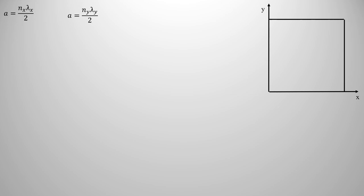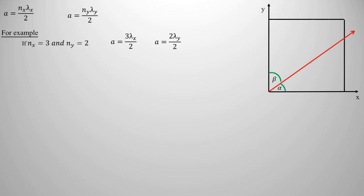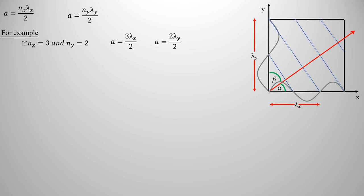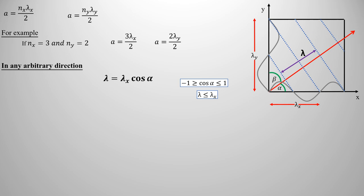There will be some more waves in arbitrary directions. Let alpha, beta, and gamma be the angles that the wave makes with the axes x, y, and z respectively. To understand this, let's take an example of a wave having modes n_x equals 3 and n_y equals 2. The line joining the node points of these two waves projects the wavelength of the wave in an arbitrary direction. Assuming the wavelength is lambda, the projection of lambda_x onto lambda will be lambda_x times cos(alpha). Since cos(alpha) has a maximum value of 1, lambda would be equal to or less than lambda_x. In the same way, the y and z components of the arbitrary wave would be lambda divided by cos(beta) and lambda divided by cos(gamma).